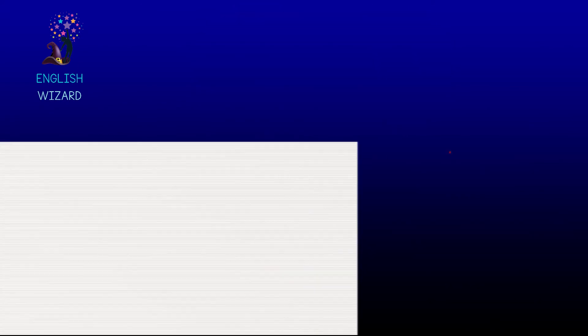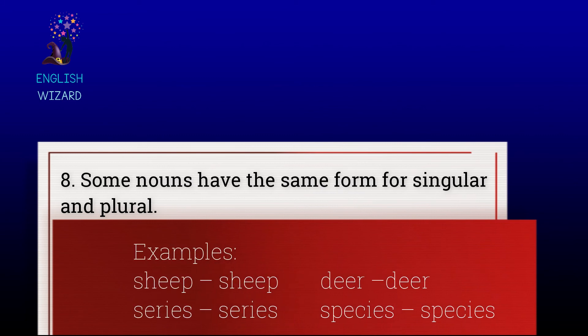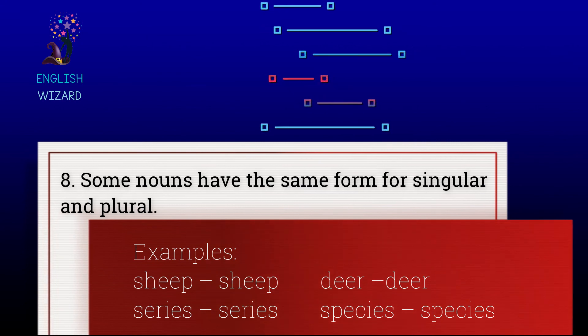Some nouns have the same form for singular and plural. Examples: Sheep, sheep. Deer, deer. Series, series. Species, species.